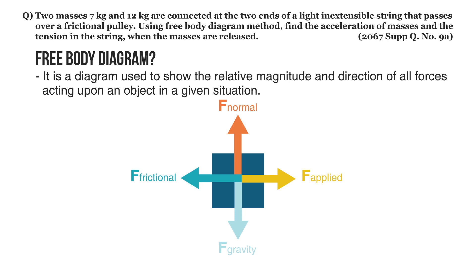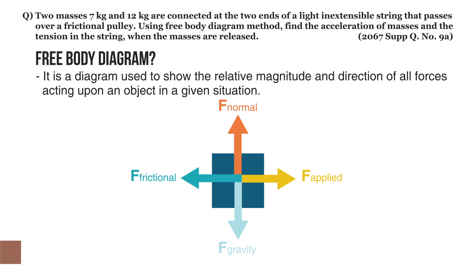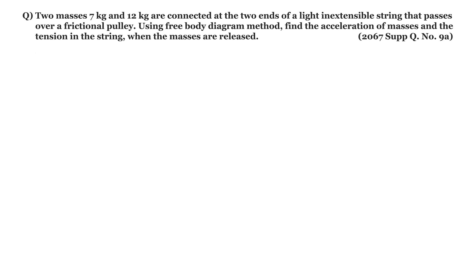Remember, objects do not necessarily always have four forces acting upon them — there may be more or less. There is actually no hard and fast rule about the number of forces that must be drawn in a free body diagram. The only rule for drawing is to depict all the forces that exist for the object in the given situation. Thus, to construct a free body diagram, it is extremely important to know the various types of forces.